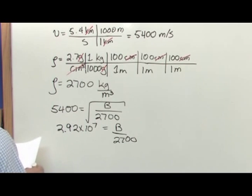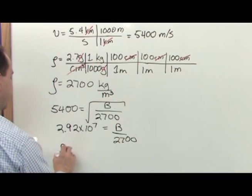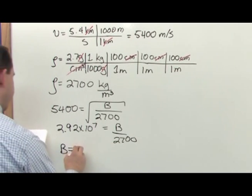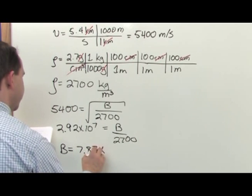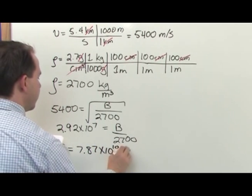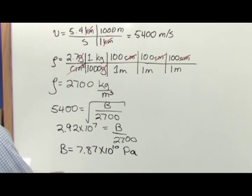Solve for B, we just multiply both sides by 2,700. So B times this is going to give you 7.87 times 10 to the 10 Pascals. The unit for bulk modulus is Pascals.